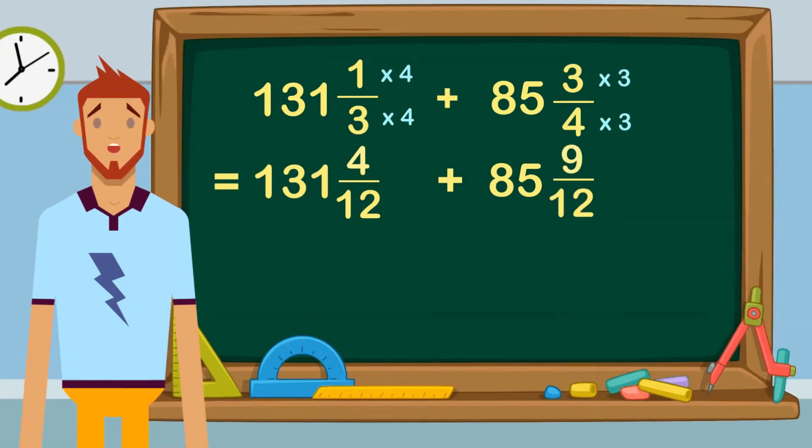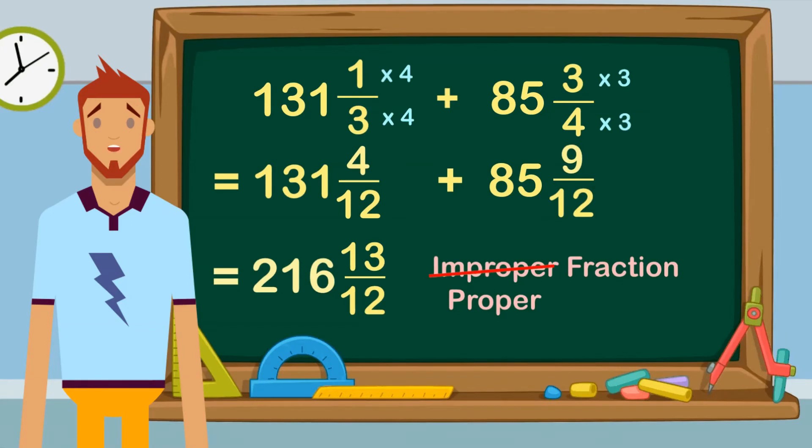Now that we have the same denominator, let's add our fractions. 131+85=216. Then we add our numerators: 4+9=13. You'll notice our answer contains an improper fraction. We must change it to a proper fraction to get our final answer.